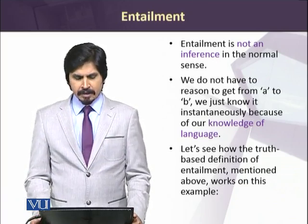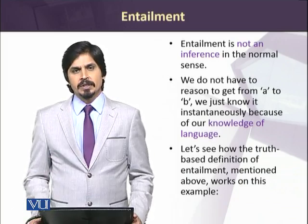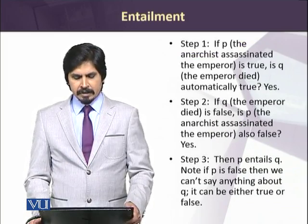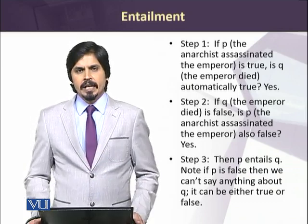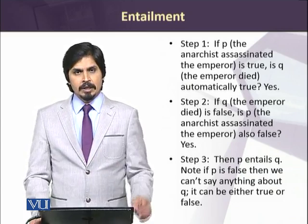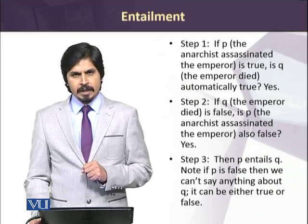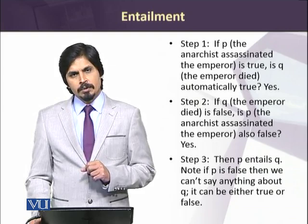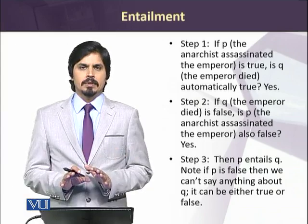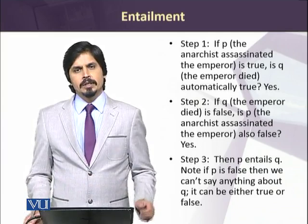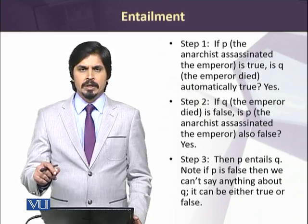Let's see how the truth-based definition of entailment is exemplified in a stepwise process. At step one, if P — 'The anarchist assassinated the emperor' — is true, is Q — 'The emperor died' — automatically true? Yes. If we believe that an anarchist has murdered the emperor, then the emperor has died, so Q is automatically true. Check one is confirmed.